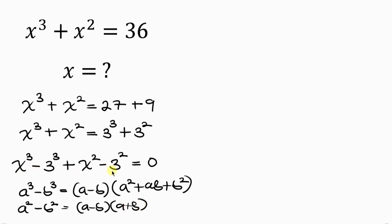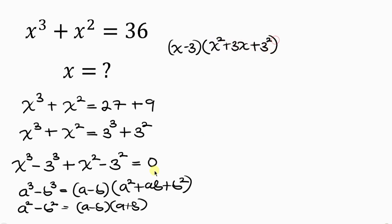Now we're going to write this in terms of the identities. For the difference of two cubes it becomes (x minus 3)(x² plus 3x plus 3²), plus, writing the identity for the difference of two squares, (x minus 3)(x plus 3), and this is equal to 0.